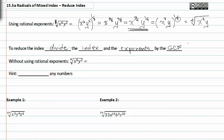Without using rational exponents, we can simply look at the index and the exponents and see that the common factor between them is two. By dividing each piece by two,